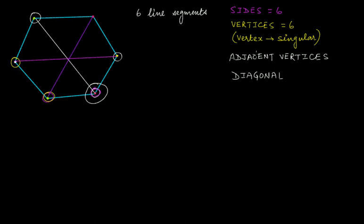So these were some of the important terms you should know: sides, vertices, adjacent vertices, and diagonals. These terms are really important for our further discussion, so you should be familiar with them. Thanks for watching.